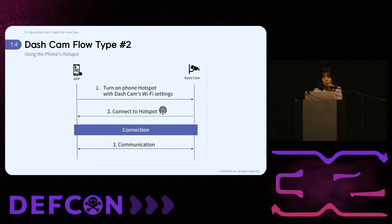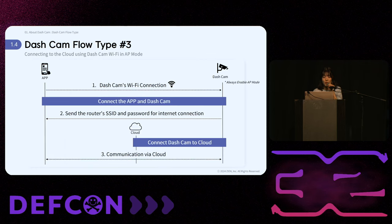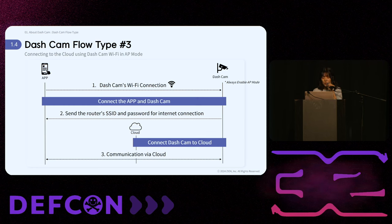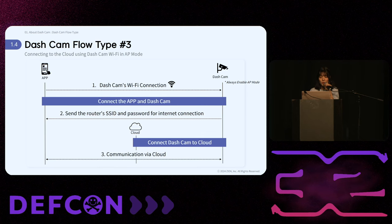By configuring the phone's hotspot to align with the dashcam's Wi-Fi settings and activating the hotspot, the dashcam can establish and communicate through it. In cloud communication, the dashcam's AP mode remains activated and no Bluetooth connection is needed. You connect to the dashcam's Wi-Fi, then provide the router's SSID and password to connect the dashcam to the internet and enable cloud functionality. Communication between the app and the dashcam is then managed through the cloud.